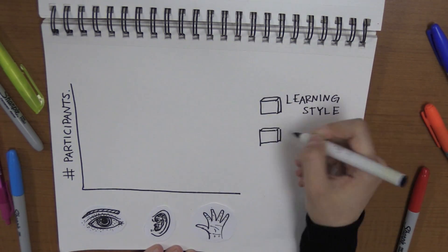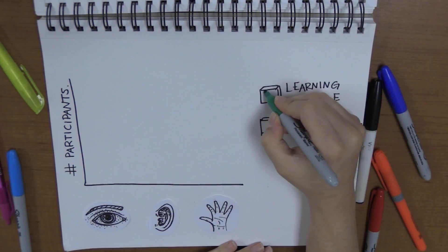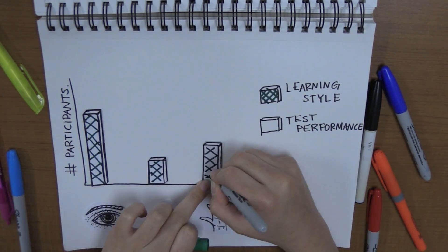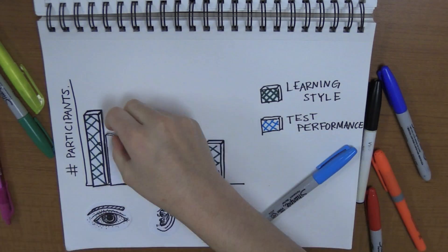This experiment shows that when learning styles are put to the test under controlled conditions, there is no difference in performance. Students perform equally well regardless of whether or not they learn in their preferred style.